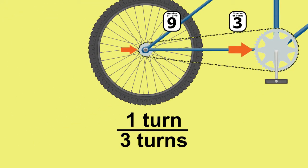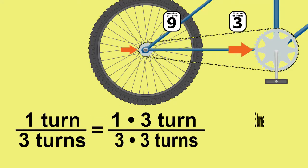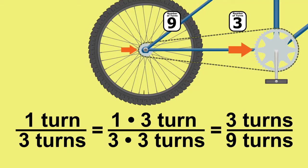For every one turn of the larger gear, the smaller gear turns three times. In this problem, the cyclist turns the larger gear three times. To solve, take three times three to get nine turns. The smaller gear will turn nine times.